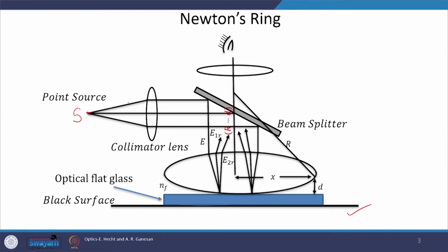The experimental arrangement of Newton's ring experiment is shown here schematically. The point source is kept here and from the point source, the spherical wave front emanates and they are made parallel using a convex lens. This parallel beam of light falls on a semi-silvered glass plate or beam splitter. The beam splitter reflects the incoming beams towards the arrangement shown here, which is a lens kept on top of a plain glass plate.